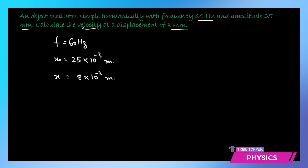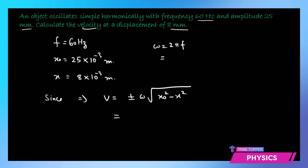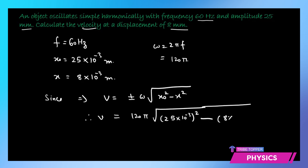We need to find ω, since the velocity equation is v = ±ω√(x₀² − x²). We calculate ω = 2πf = 2π × 60 = 120π. Therefore, the velocity is 120π × √((25 × 10⁻³)² − (8 × 10⁻³)²). Substituting and solving, we get v = ±8.9 meters per second.